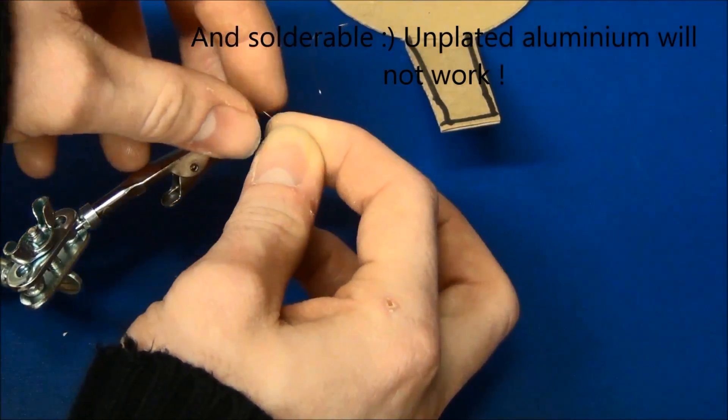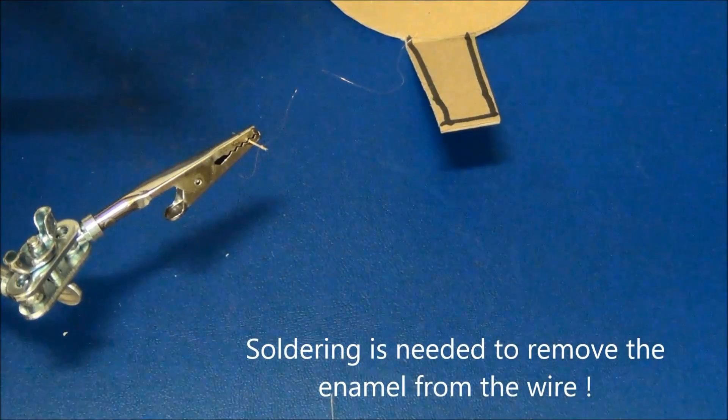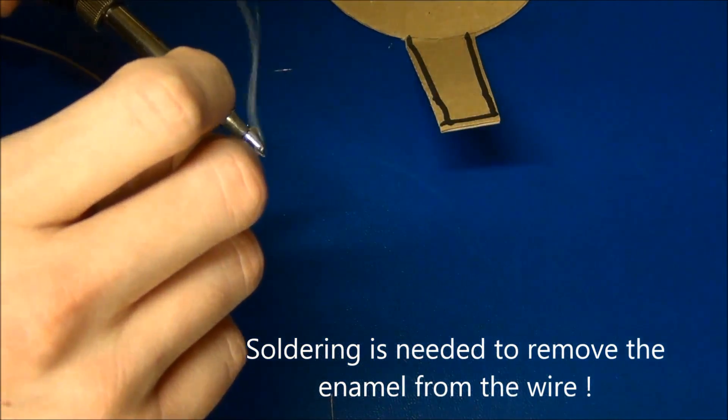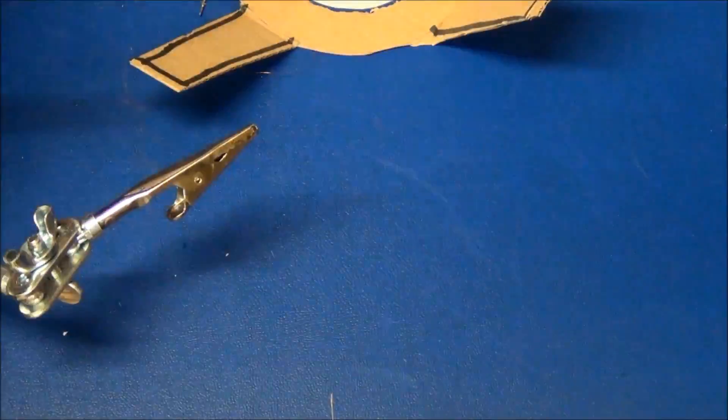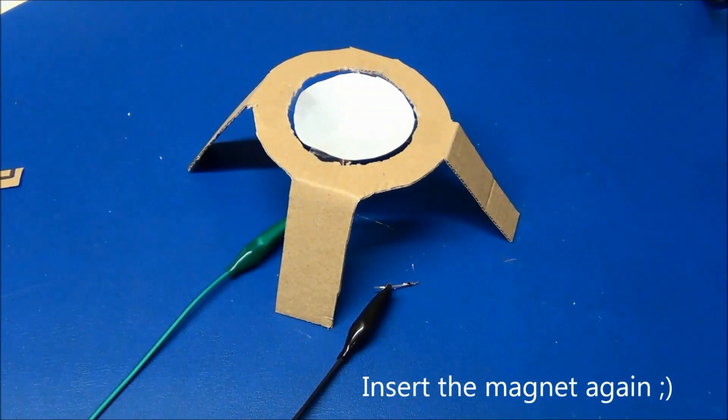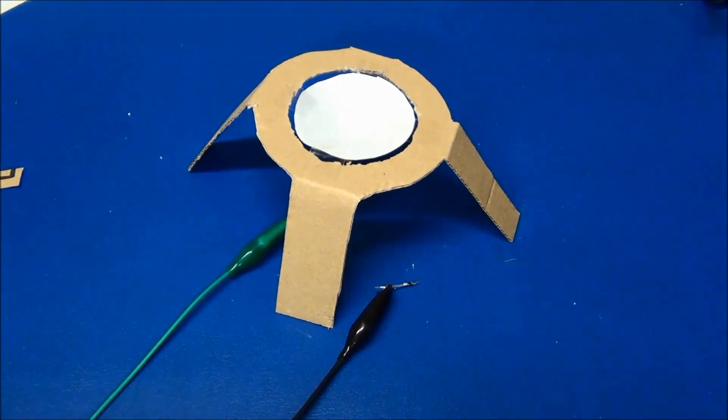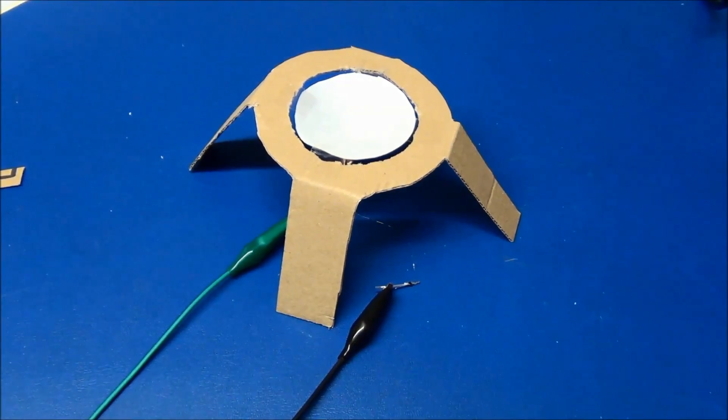Now attach each wire to an old component lead or anything else conductive. And we'll need to solder it. So here it is, all finished up. Everything left to do is a little test. So I have hooked up a signal generator. And it is indeed working. So let's test the music quality.